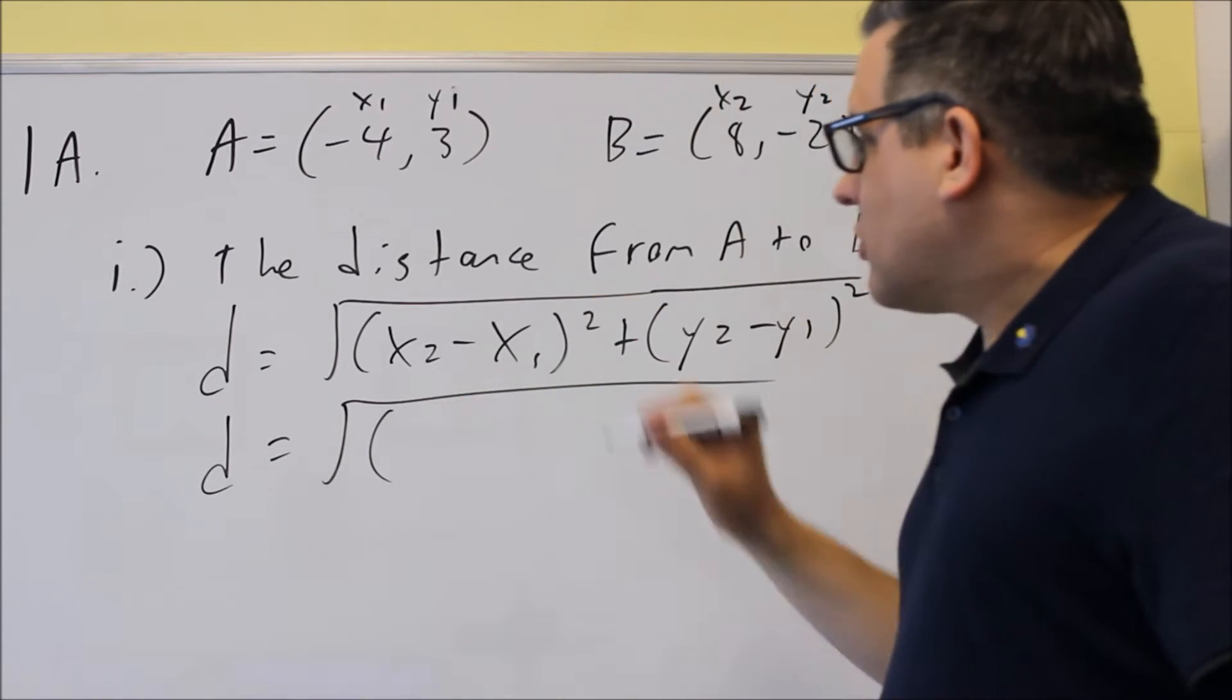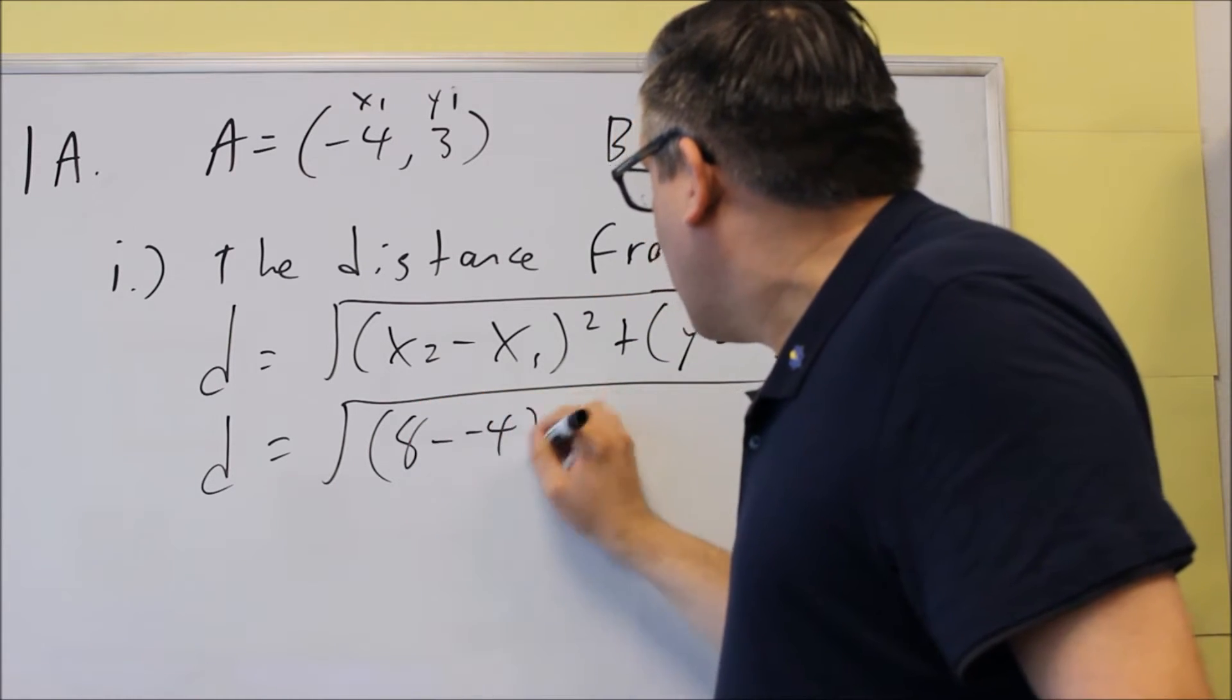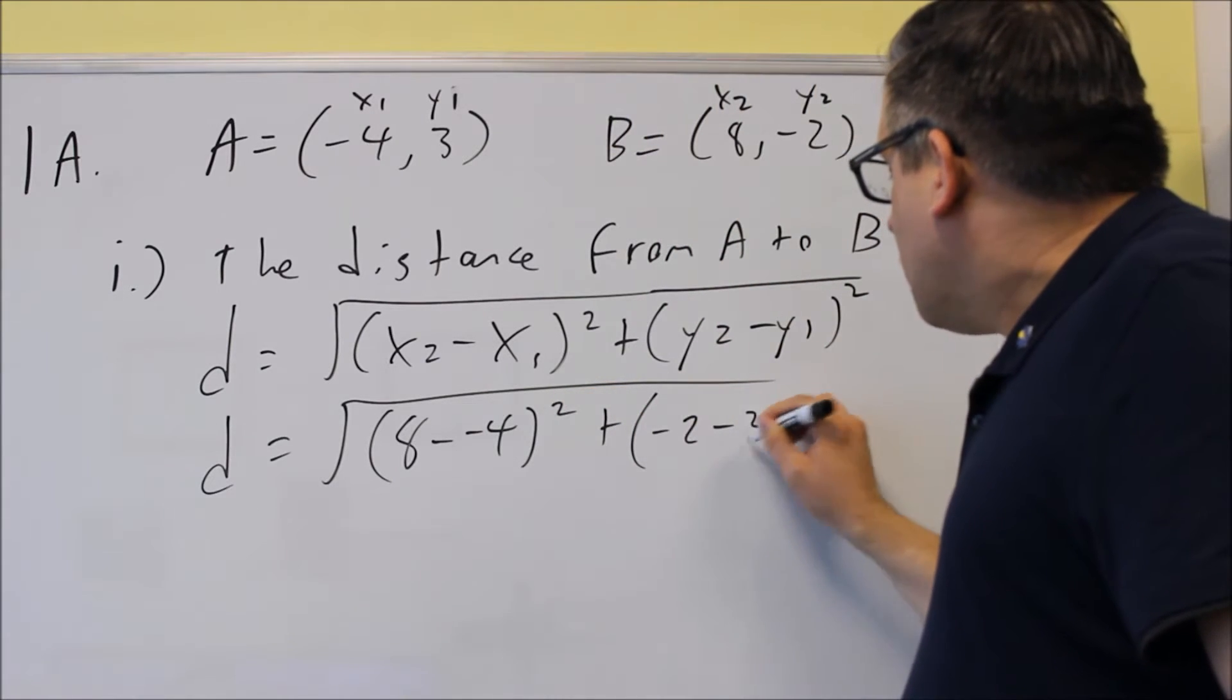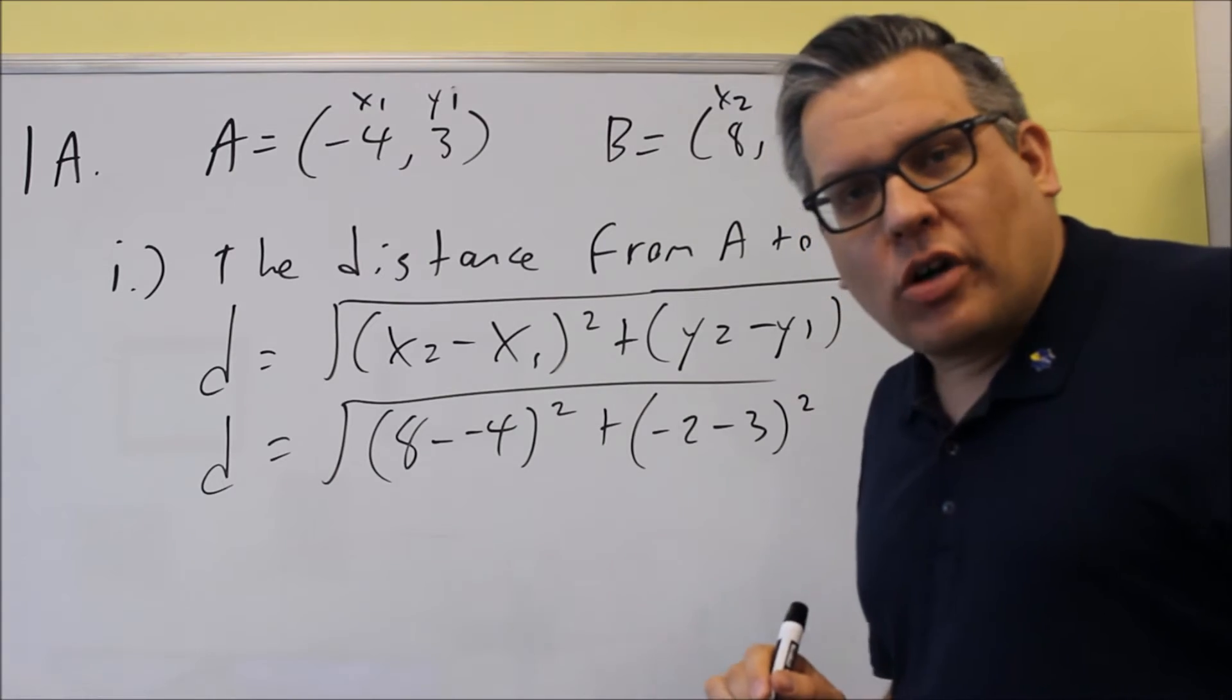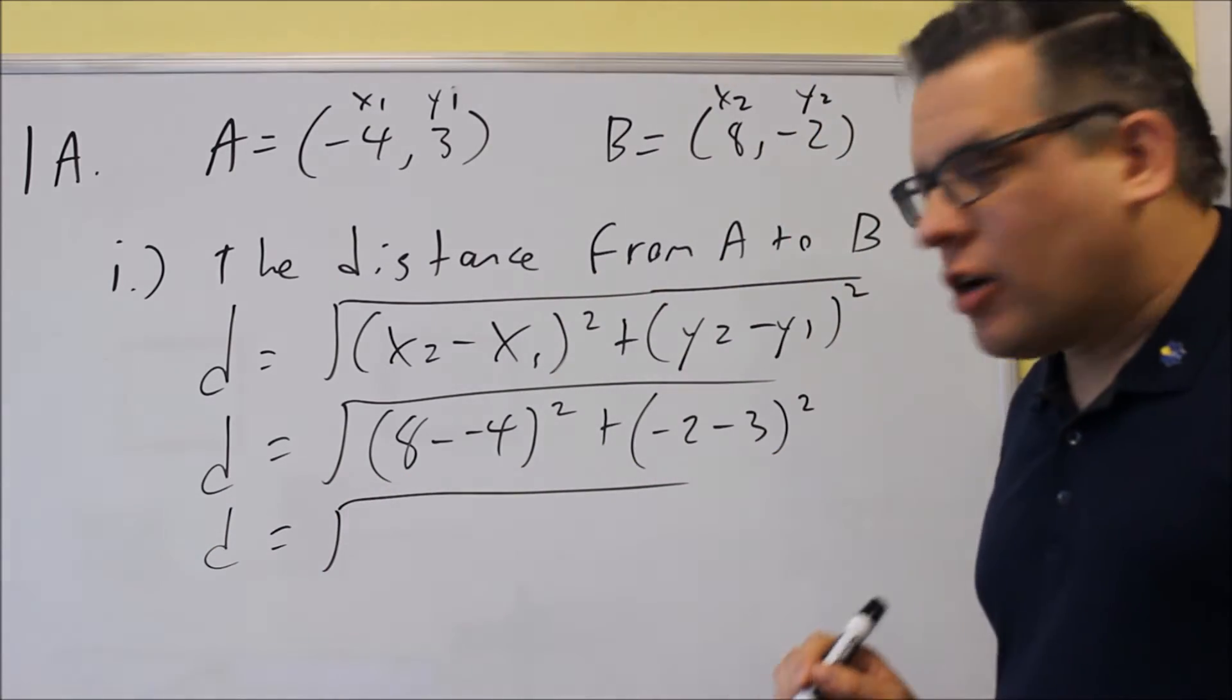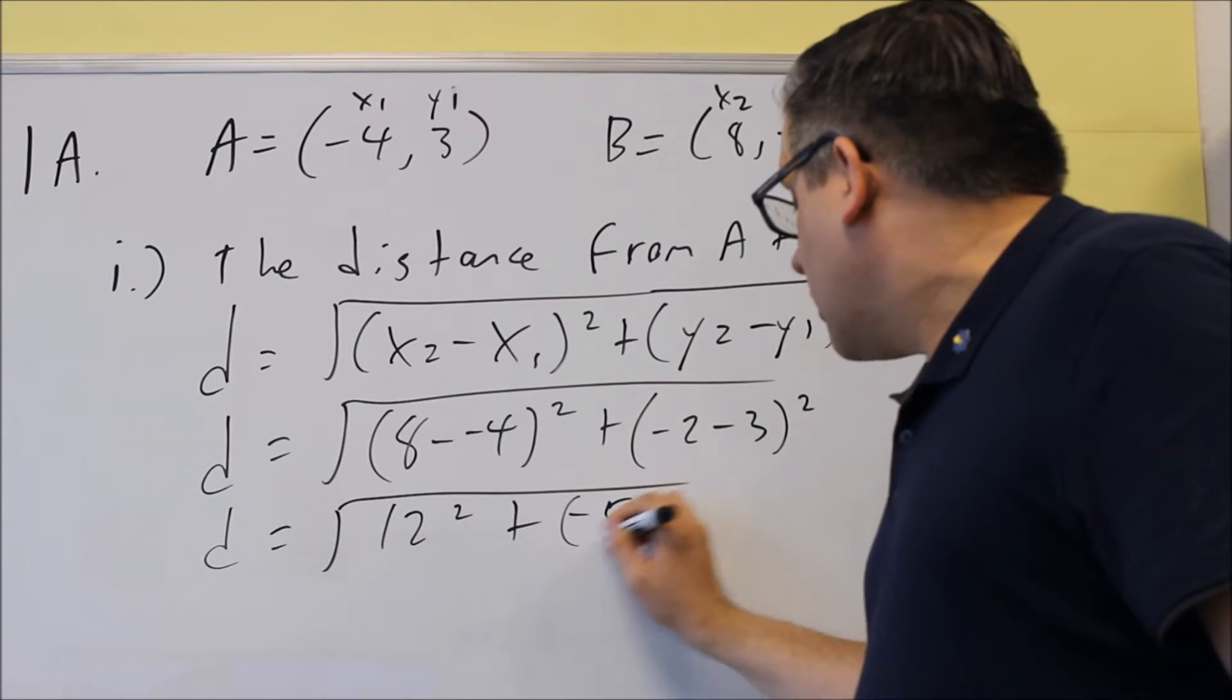We're going to take the difference in the x's, so we'll do 8 minus negative 4 squared. We'll do the difference in the y's, negative 2 minus 3 quantity squared. And we just keep on going until we simplify it all the way down. So we get here 12 squared and this is negative 5 squared.